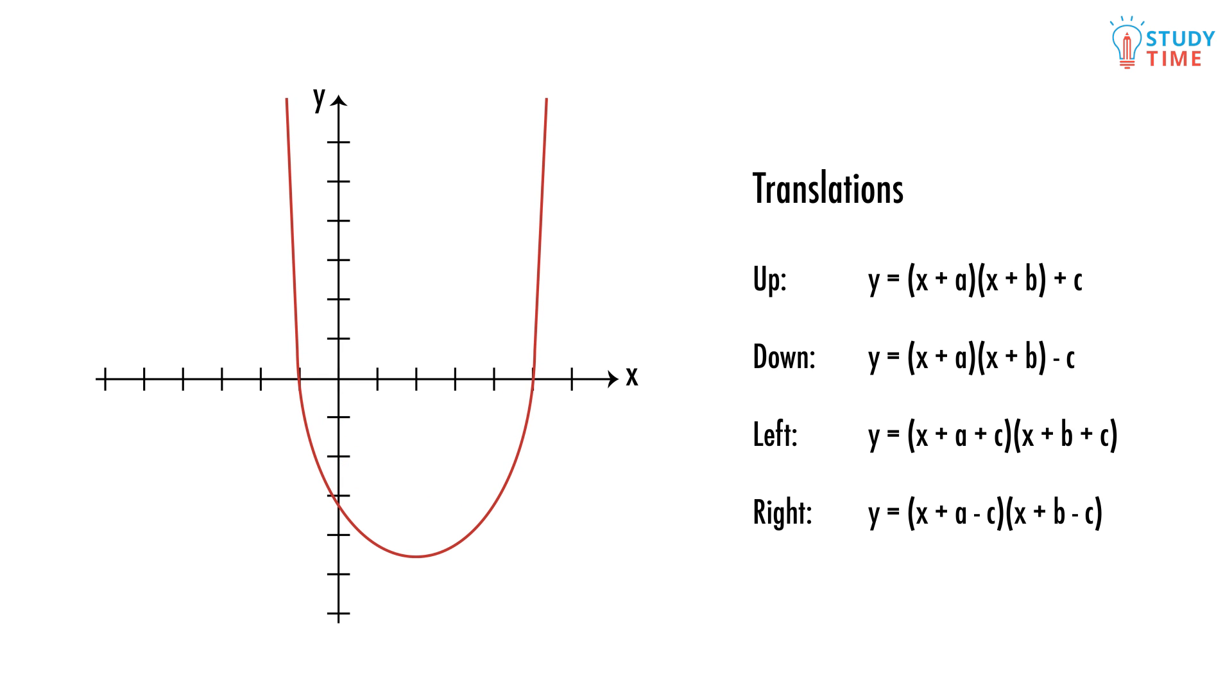Before the translation, they're at negative 1 and positive 5 on the x-axis. If we were to move the parabola two units to the left, we just subtract 2 from each root. The x-intercepts are now negative 3 and positive 3, so y equals 0.5 times (x plus 3) times (x minus 3).